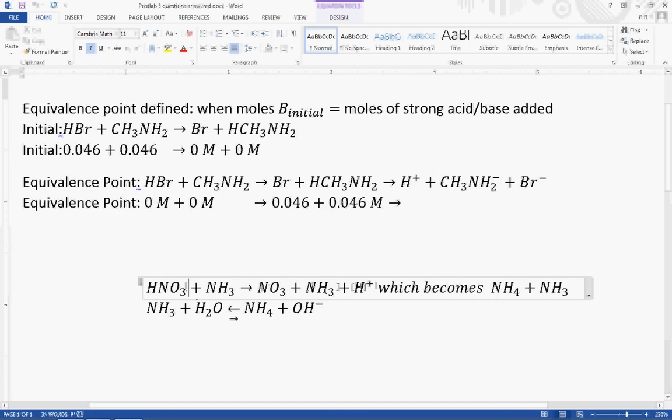You're going to be left with NH3 and hydrogens, which are going to become NH4+ and NH3. If you have more H+ than NH3, you're actually going to have no NH3 left, but you're actually going to have more NH3s, which means you'll have some NH3 left over and a lot of NH4+.